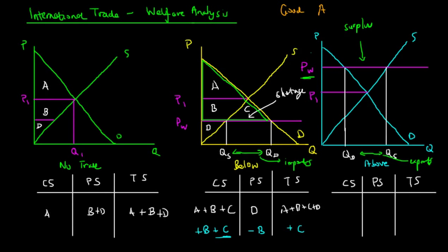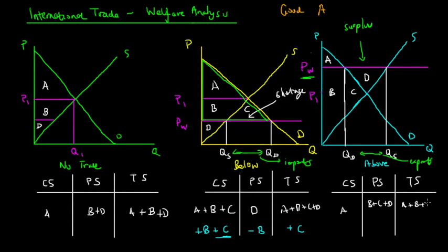As a net exporter, we can again use welfare analysis to analyze this. The consumer surplus here would only be A — this small area at the top. The producer surplus, or the exportable surplus, would be B, C, and D. So consumer surplus is A, producer surplus is B plus C plus D, and total surplus is A plus B plus C plus D.